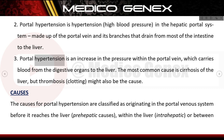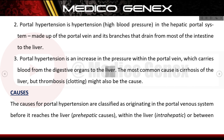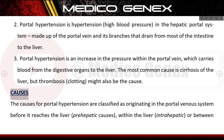Portal hypertension is an increase in the pressure within the portal vein, which carries blood from the digestive organs to the liver. The most common cause is cirrhosis of the liver, but thrombosis (clotting) might also be the cause.